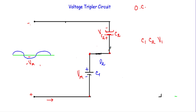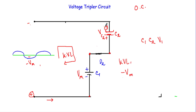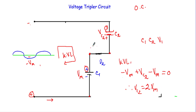Applying Kirchhoff's voltage law in this loop in the clockwise direction: I first encounter the input voltage at its positive terminal, so minus Vm; then I encounter capacitor C2 at its negative terminal, so plus Vc2; then capacitor C1 at its positive terminal, so minus Vc1, which equals Vm. Setting the sum to zero: minus Vm plus Vc2 minus Vm equals zero, therefore Vc2 equals 2Vm. During this negative half cycle, capacitor C2 stores a voltage equal to twice the maximum value of the input voltage.